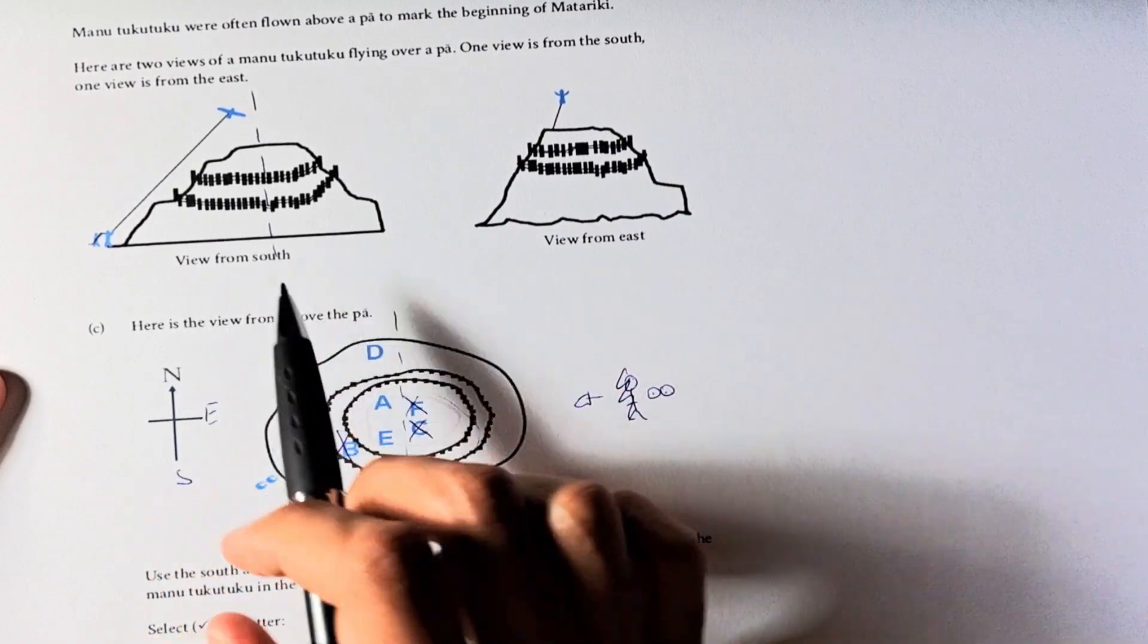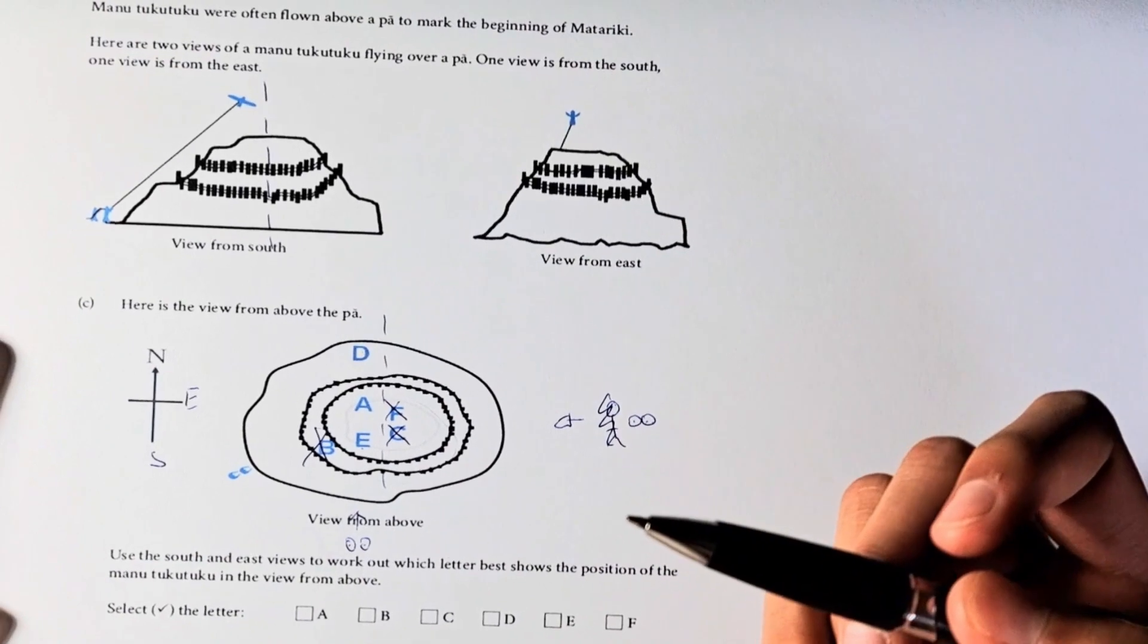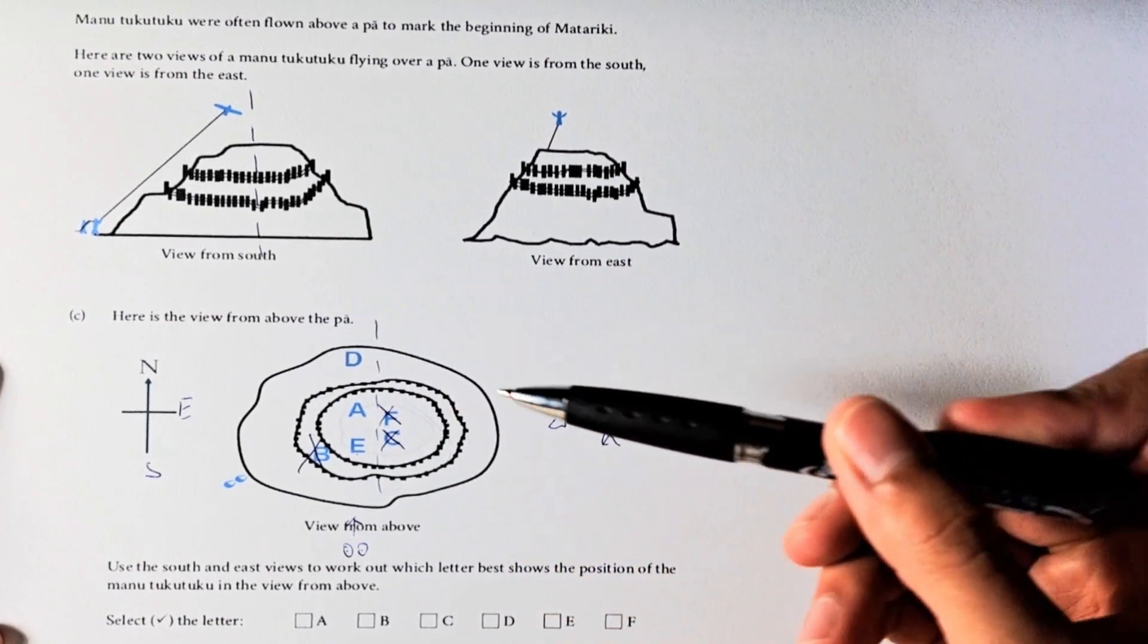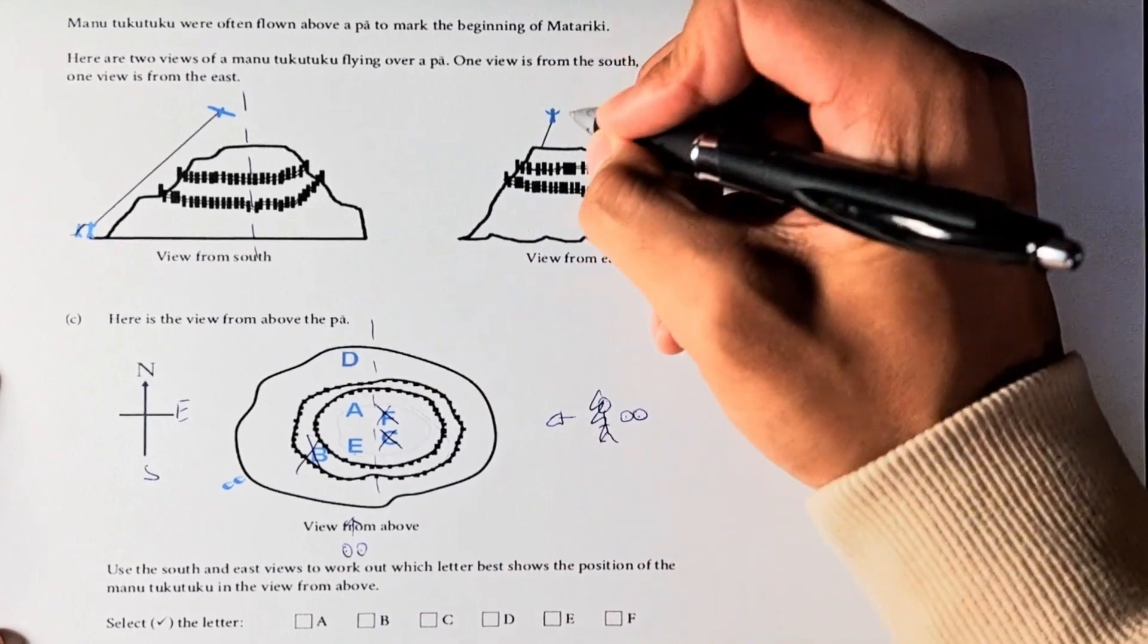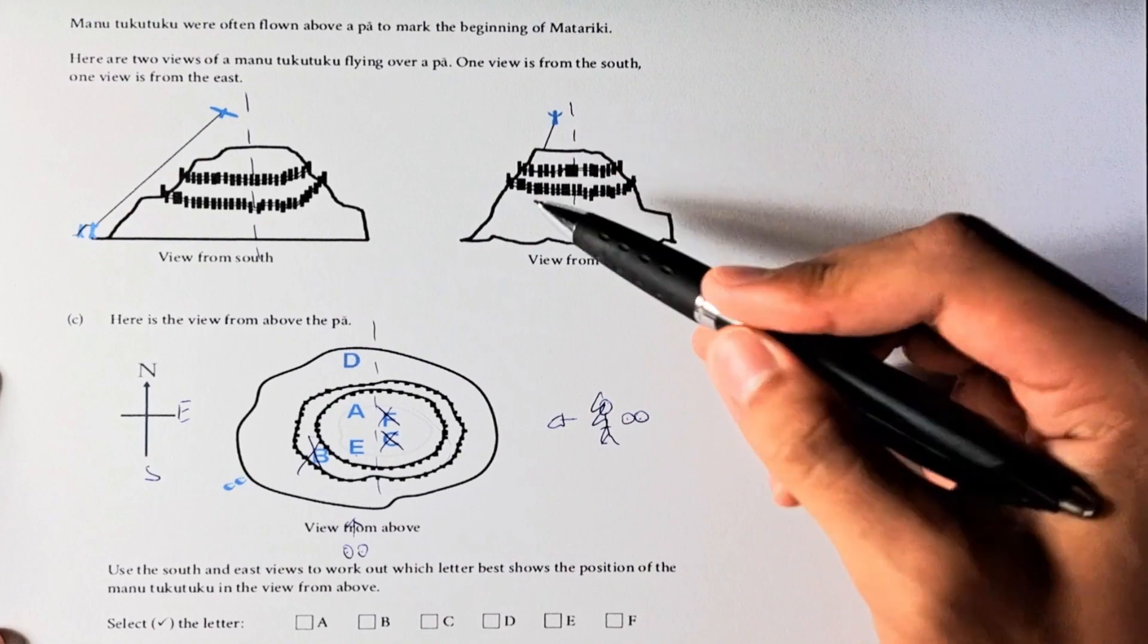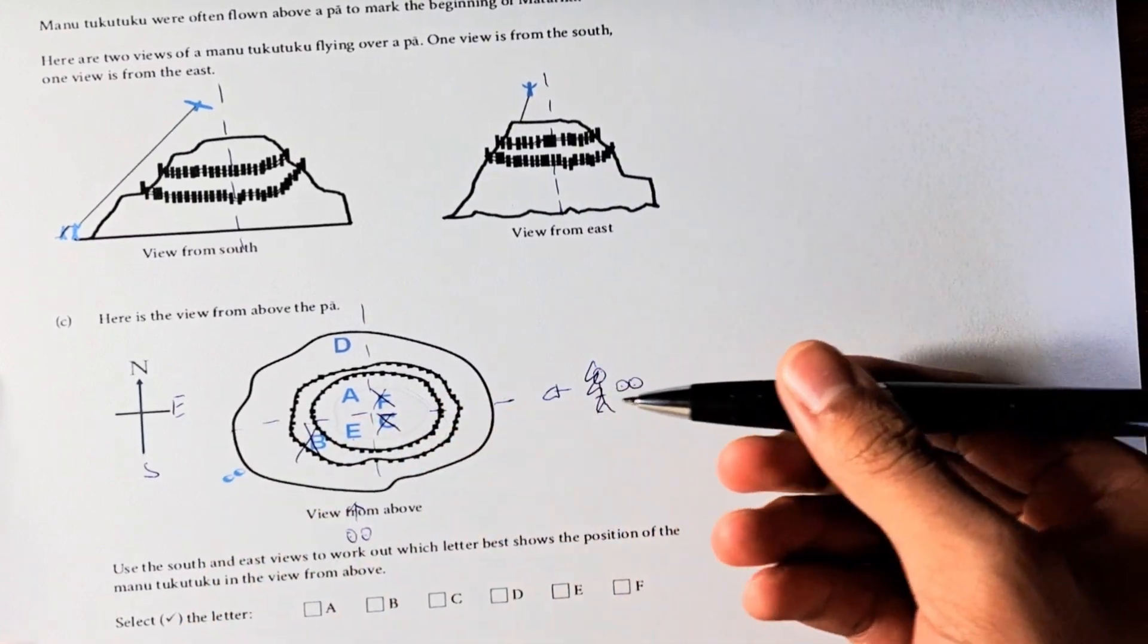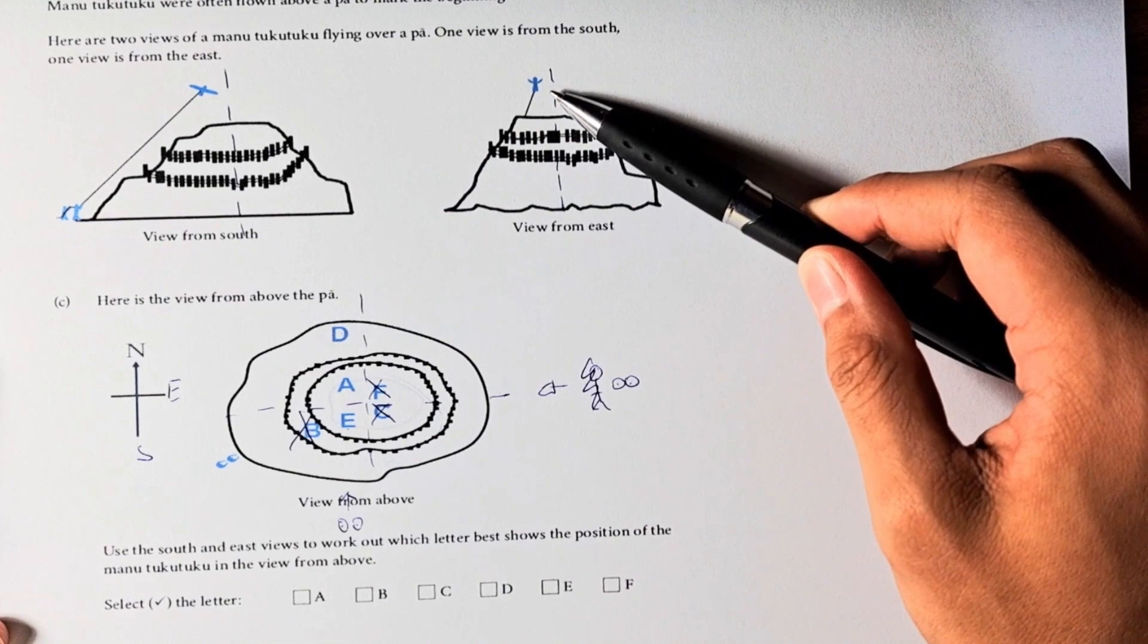After looking at this view from the south, we know that it could either be D, A or E. Now if we look at the view from the east, we are here now looking at the island from this perspective. We're trying to figure out whether it's E, A or D. Again, if we draw a midline here, the midline would be here on the bird's eye view because we're looking at it from the east.